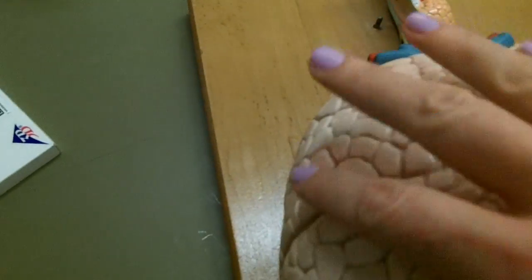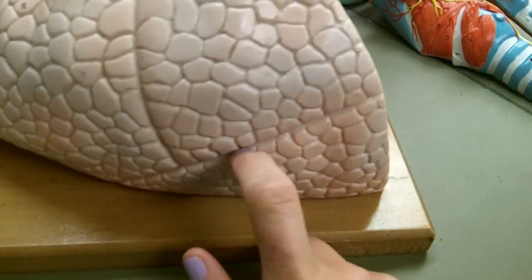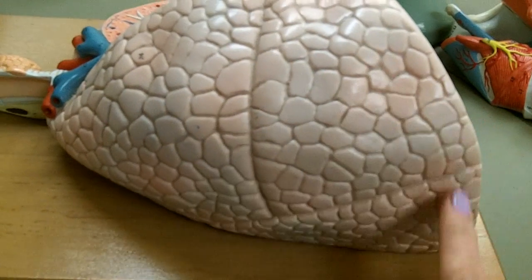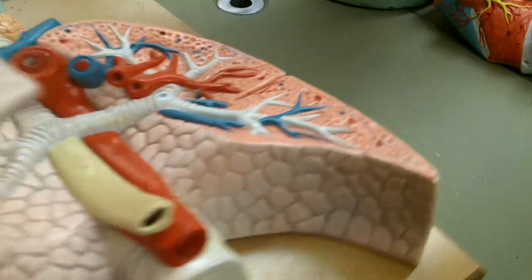The right lung has an oblique fissure and a horizontal fissure to give three lobes.